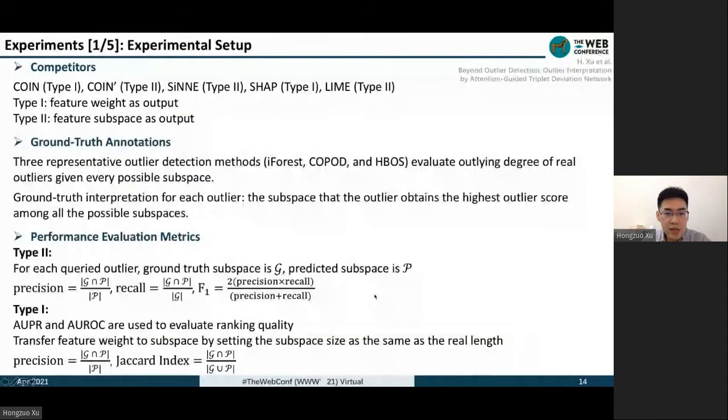Next section is our experiment. I will first introduce the experimental setup. We use two types of competitor methods. The first one uses feature weight as output, and the next type uses feature subspace as output.